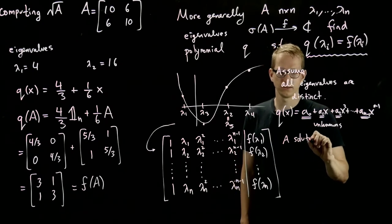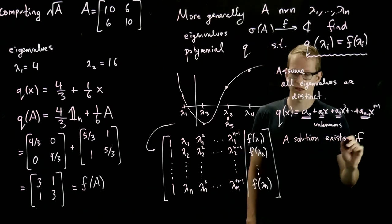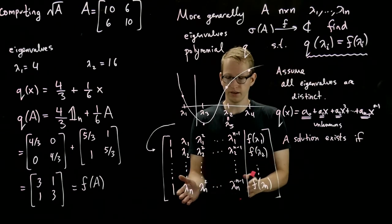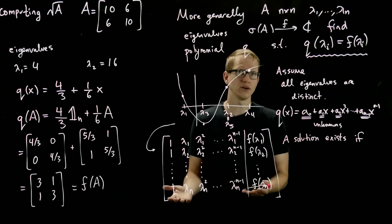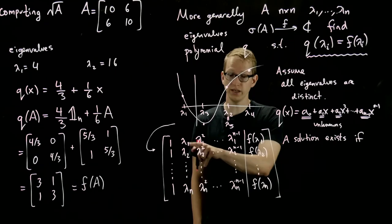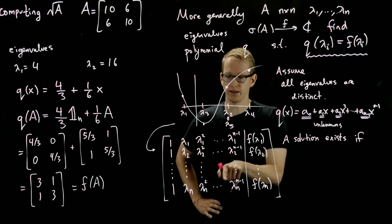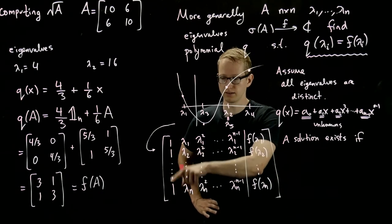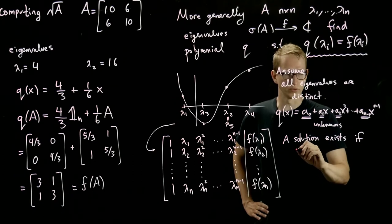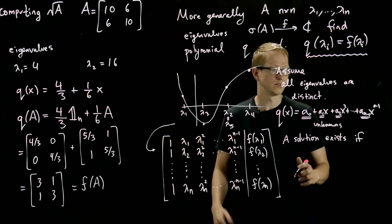And a solution exists if we can solve this system, and one criteria that allows us to solve this system is if this matrix here, which is an n by n matrix, if this matrix is invertible. And when is the matrix invertible? If the determinant of this matrix is non-zero.